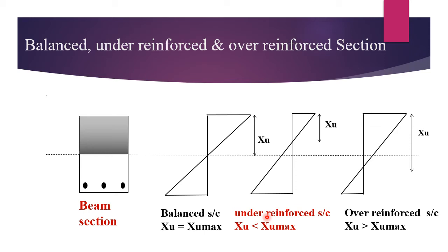Steel failed first. And in this section, the actual neutral axis which is Xu is less than the critical neutral axis, that is Xu is less than Xu max.